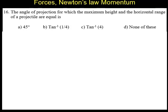For this one, the maximum height H max is given by the formula U square sine square theta by 2g. This is the maximum height formula.